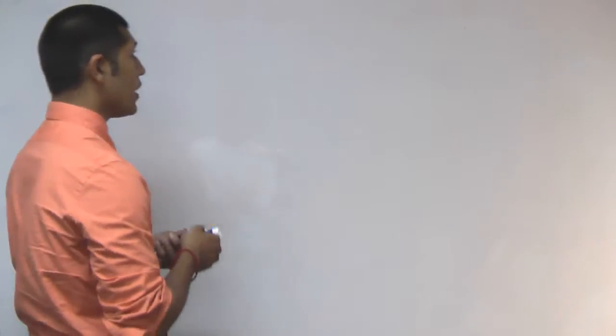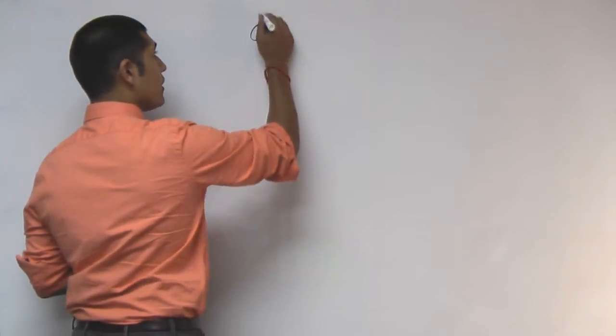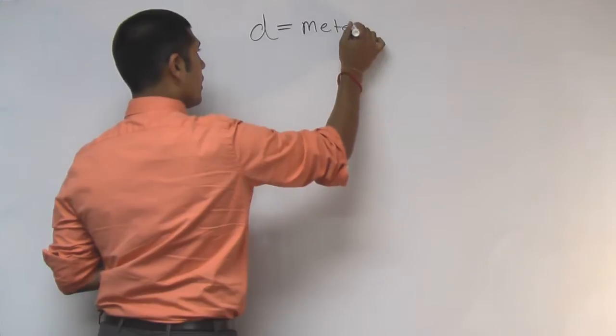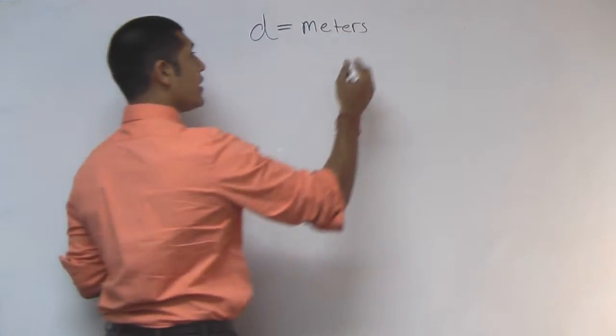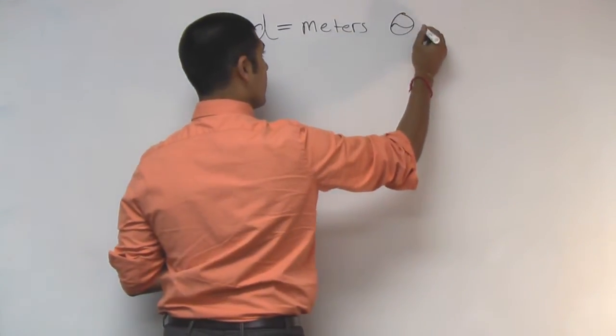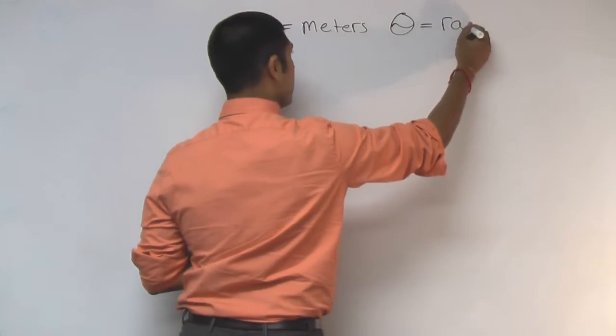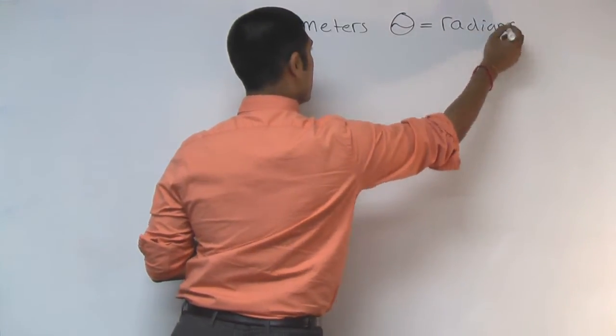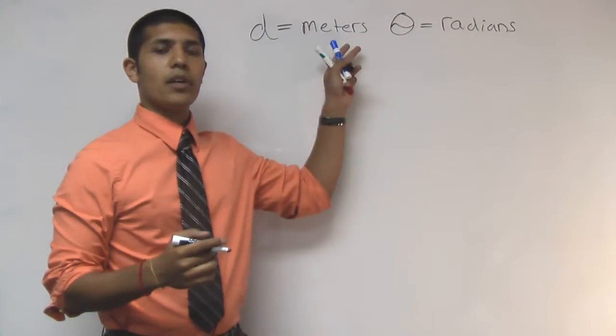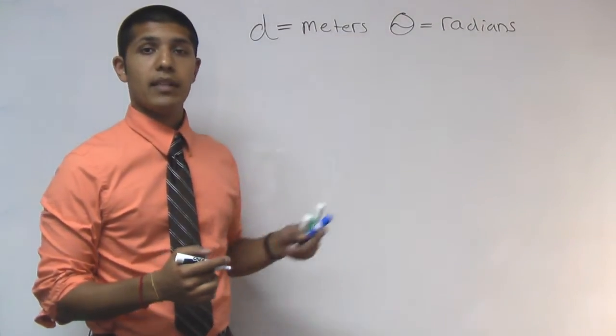The first thing we need to do is just analyze our units. Our linear displacement is measured in meters, while our rotational displacement with the variable theta is measured in radians. This is the baseline unit, and we're going to extrapolate that to velocity and acceleration.